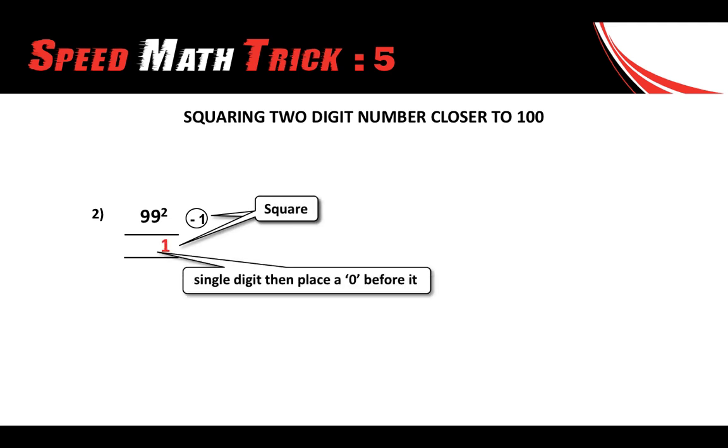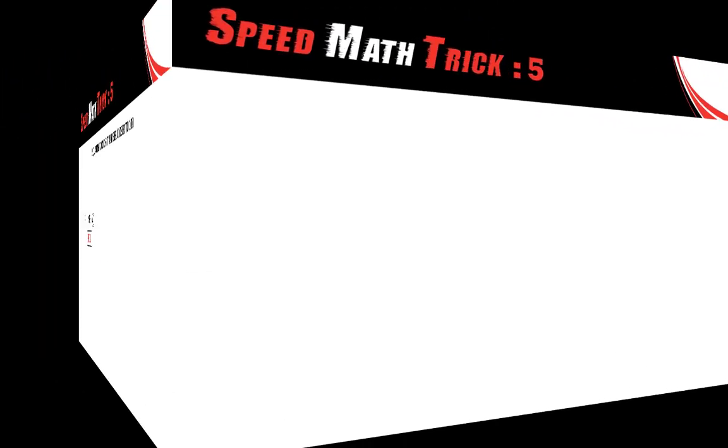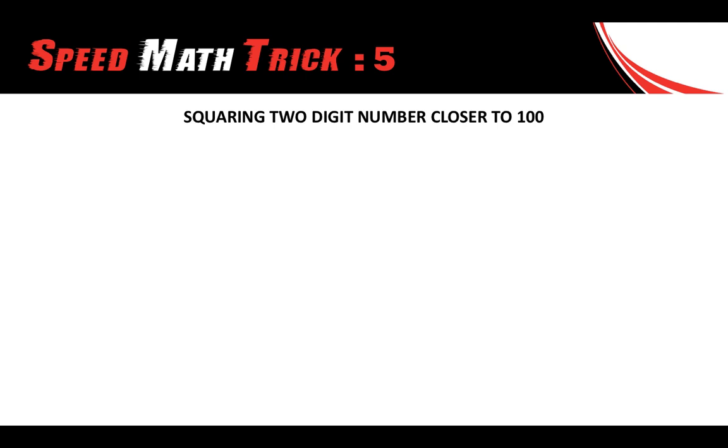As a rule we are supposed to put a 0 before that number to make it a double digit. Last step, this number and the number in the circle we need to take the difference. So 99 minus 1 will give you 98, and there you have the answer, 9801.